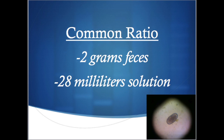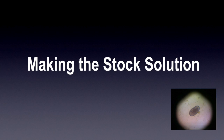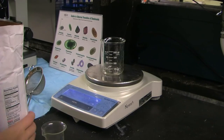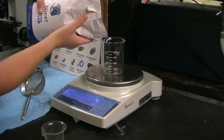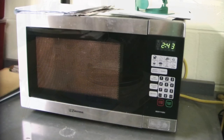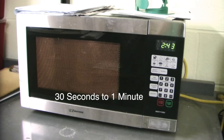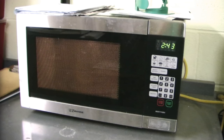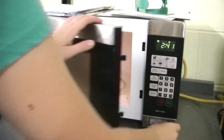There are several ratios of feces to solution that can be used, but the most important is that the volume of flotation solution and the weight of the feces are known numbers. A common ratio is 2 grams of feces to 28 milliliters of solution. Here we'll be using a sugar solution as the flotation medium. To make a stock solution, use 1 pound of sugar with 355 milliliters of water. The solution can be heated in a microwave until the sugar has completely dissolved, about 30 seconds to 1 minute depending on the strength of your microwave. The goal is to have the sugar completely dissolved into the water, not to get it so hot that it becomes warm to the touch.